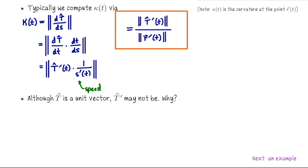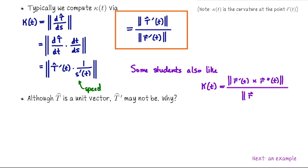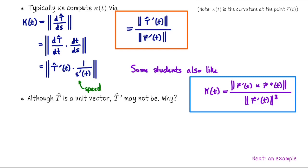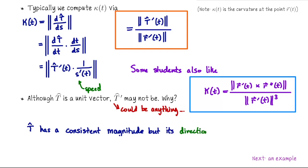If your curve is parametrized as r of t, you compute t-hat, take its derivative with respect to t, compute the length for the numerator, and divide by the speed of the curve. There's also another formula for curvature — I won't derive it here — but if you compute the velocity vector and the acceleration vector, you can plug into that formula directly. A remark: although t-hat is a unit length vector, its derivative is not necessarily unit length — it really could be anything. The derivative detects changes in direction, since while t-hat has a consistent magnitude, its direction can change.